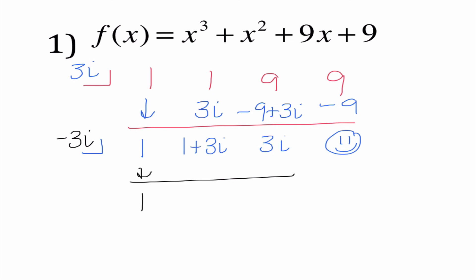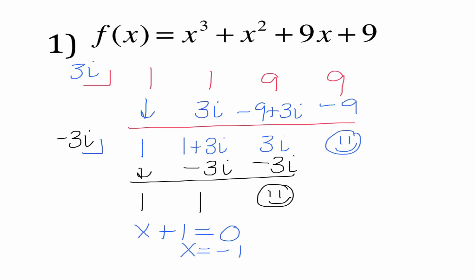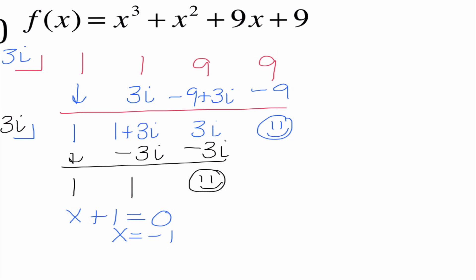1 times negative 3i is negative 3i, so I get 1; 1 times negative 3i is negative 3i, so I get zero. This was x cubed, this is x squared, this is just a linear function: x plus 1 equals 0, so x equals negative 1. Our zeros here: x equals plus or minus 3i, and x equals negative 1.